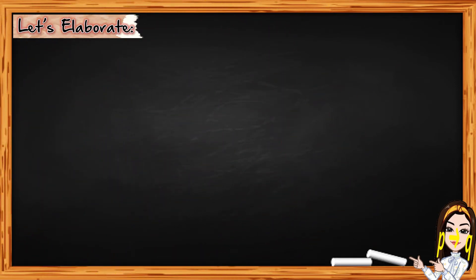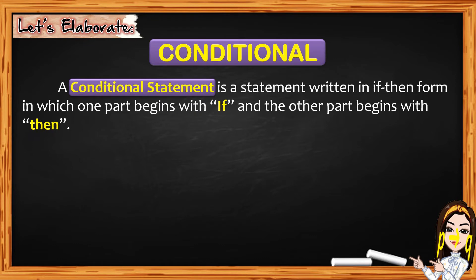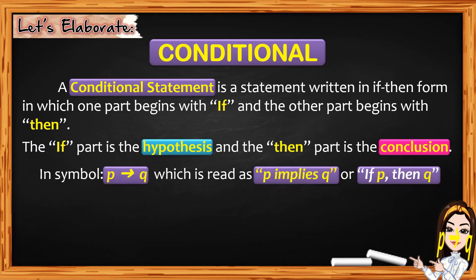Now let's elaborate. We have here the conditional. A conditional statement is a statement written in the if-then form in which one part begins with if and the other part begins with then. The if part is the hypothesis and the then part is the conclusion. In symbol, this is read as P implies Q, or if P, then Q. P is the hypothesis and Q is the conclusion.